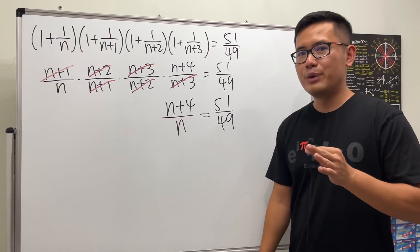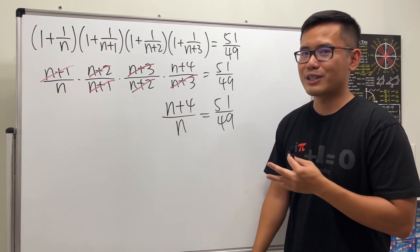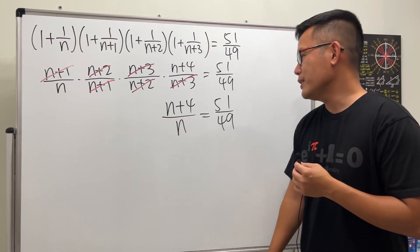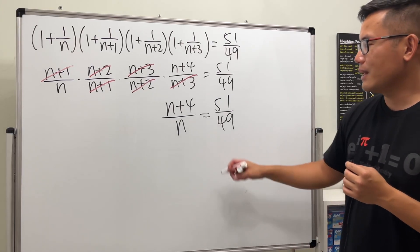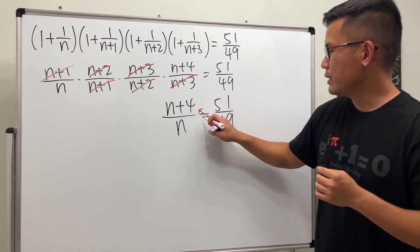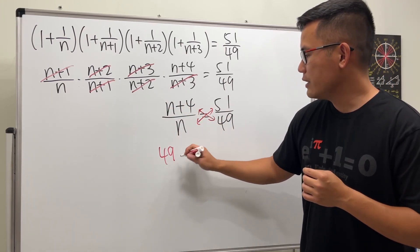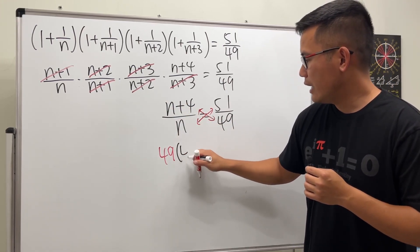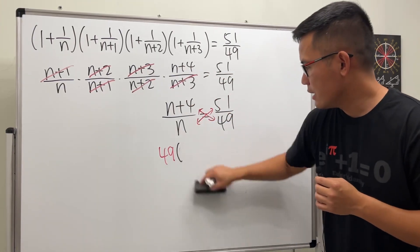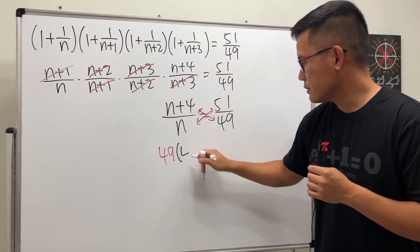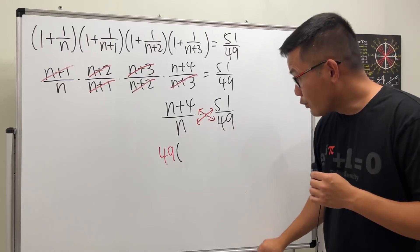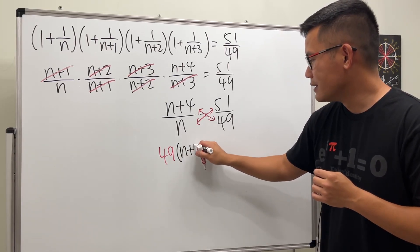So it's not that scary anymore, even though this is still a fractional or rational equation. One easy way to do it, just cross multiply. So I'll put this down here: 49 times (n+4).